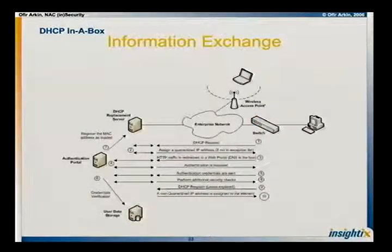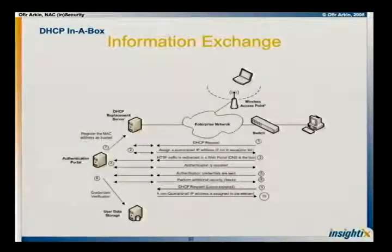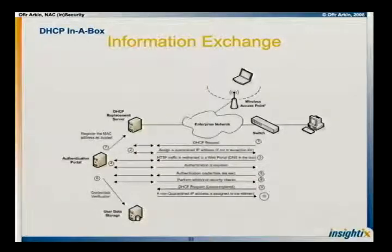The exchange of information works like this: an element comes to the network, requests a DHCP address, and gets a quarantine IP address with the DNS server assigned to the DHCP box itself. When the user tries to go somewhere, they do a DNS resolution, get the IP address of the DHCP box, go to the DHCP box, and are presented with an HTTPS authentication form. They put in their username and password, it's cross-referenced against active directory, and if correct, they're granted access to the network.